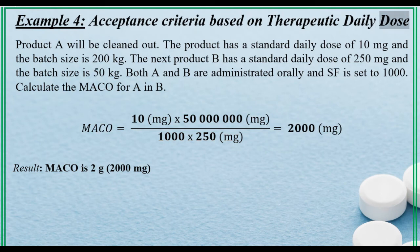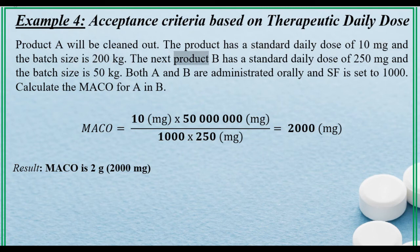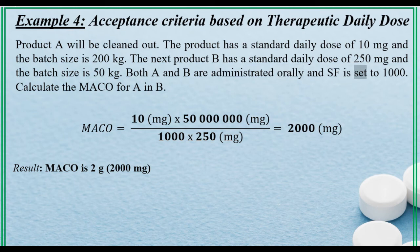Example 4: Acceptance criteria based on therapeutic daily dose. Product A will be cleaned out. The product has a standard daily dose of 10 mg and the batch size is 200 kg. The next product, Product B, has a standard daily dose of 250 mg and the batch size is 50 kg. Both A and B are administered orally and the safety factor (SF) is set to 1000. Calculate the MACO for A in B.